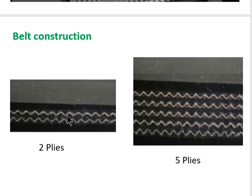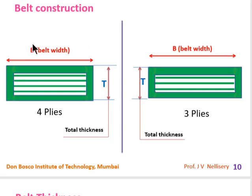The plies or mesh can be more than one. In one cross-section you can see two zigzag lines, so that belt has two plies. In the figure to the right, five zigzag lines indicate five plies. In another figure, capital B is the belt width and capital T is the total thickness — four horizontal lines indicate a four-ply belt, while the figure to the right with three lines is a three-ply belt.